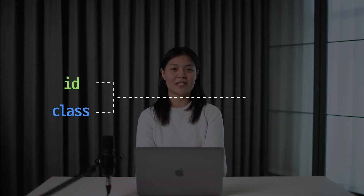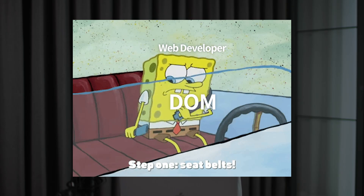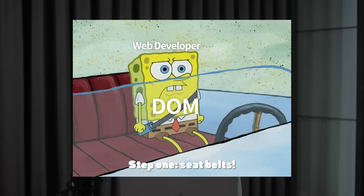As I brought it up before, the id and class attributes are used to manipulate a DOM element. Also, DOM allows JavaScript to make the HTML page active, so the DOM is an important concept for web developers. In this video, we're gonna look at the DOM in general.